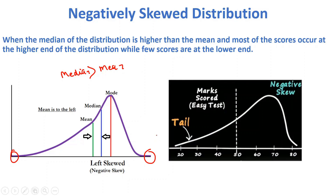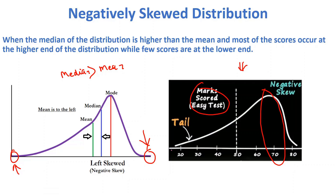As opposite to positively skewed, here we have high scores at the higher end and fewer scores at the lower end. For example, if a class teacher conducts a very easy test, most people will get higher marks. So most scores fall in the higher region, and there are very few scores in the lower region. This is called a negatively skewed distribution.